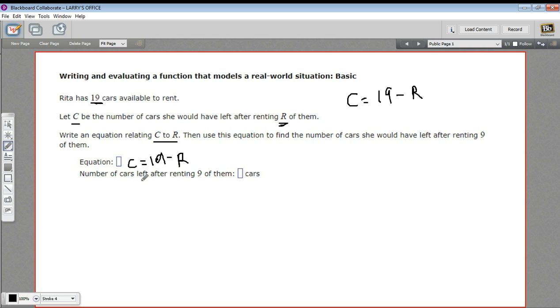In this case, they're saying imagine that nine cars were rented. How many cars are left? Well, we'd say C equals 19, and then we'd put the nine in place of R: 19 minus 9. So C equals 10.